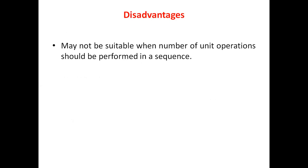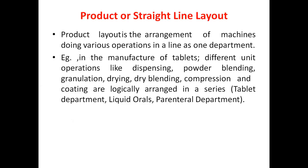The disadvantage of the process layout is that it may not be suitable when a number of unit operations are performed in a sequential manner — in such cases it is not advisable. The second type, the product or straight-line layout, is the arrangement of machines doing various operations in a line as one department.